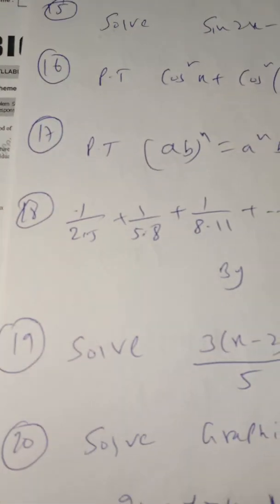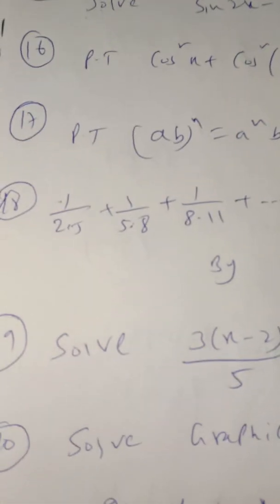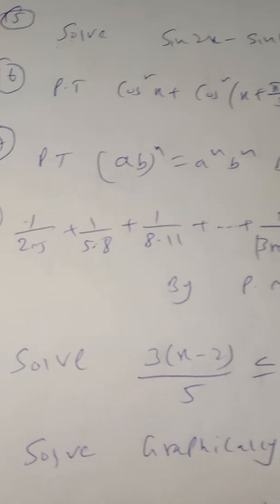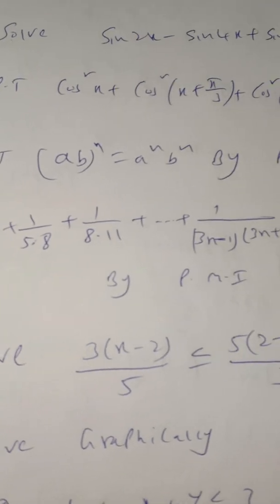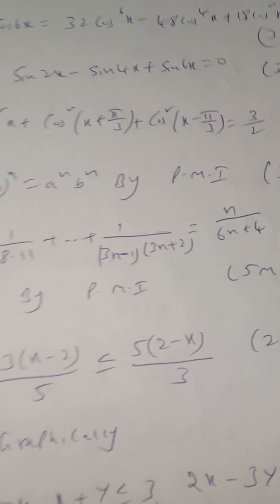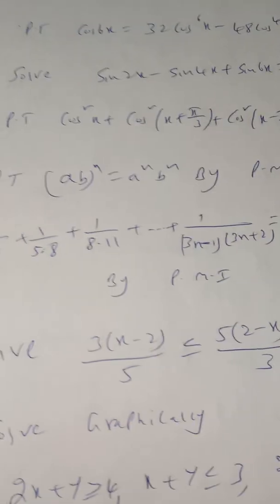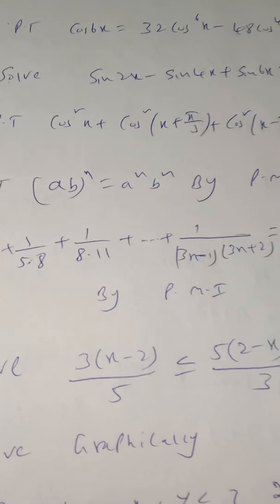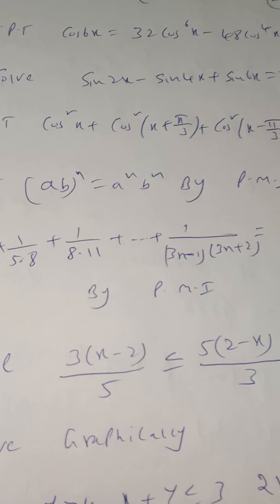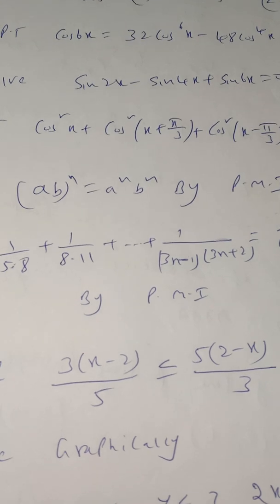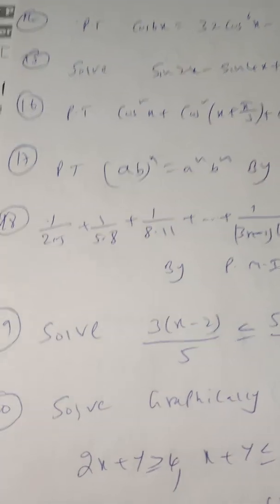For a 2-mark question in linear inequalities: solve 3(x − 2)/5 ≤ 5(2 − x)/3. There are 3 to 4 such model questions in the textbook, and one will compulsorily be asked in the final exam.